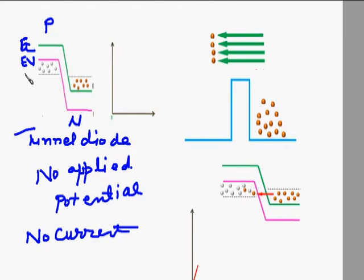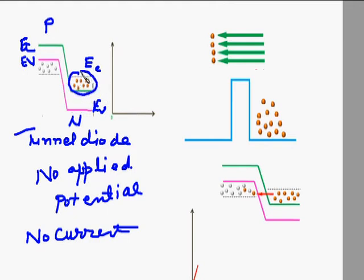Tunnel diodes are made from germanium or gallium arsenide, due to the highest peak voltage to valley point swing. With no forward bias applied, the electrons and holes cannot tunnel, so there is no current.